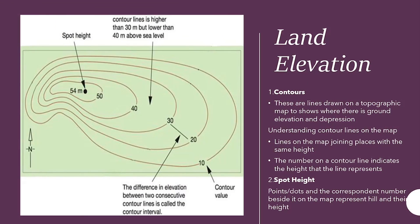Land elevation. Contours. These are lines drawn on a topographic map that shows where there is ground elevation and depression. Understanding contour lines on the map, this would help you identify lines on the map joining places within the same height, as well as the number on a contour line indicates the height that the line represents. As you can see in the example here, the number itself is the contour value. So, if one of the numbers you see has an M on it, you know that's in meters. Therefore, all of these are in meters. The one in the direct center is the highest point, the spot height, that's 54 meters, and the height goes down. So, we have 54, 50, 40, 30, 20, and 10.